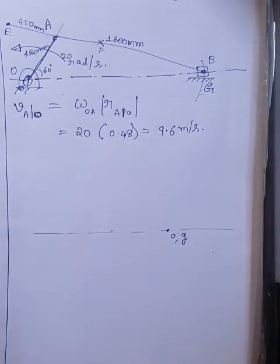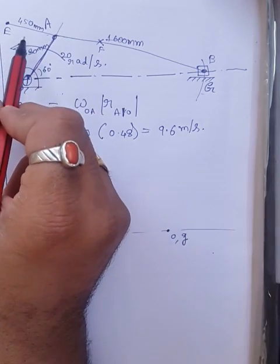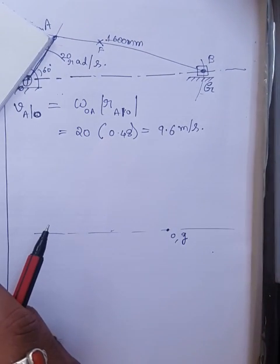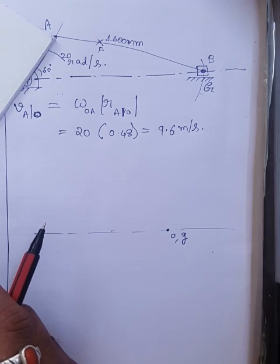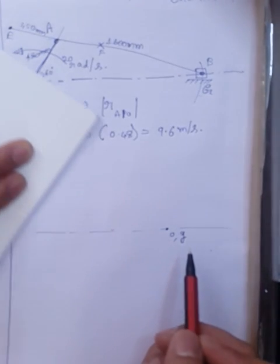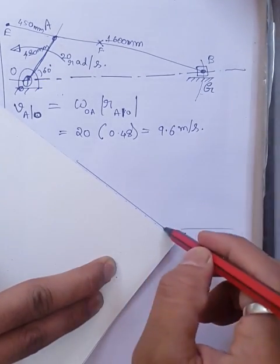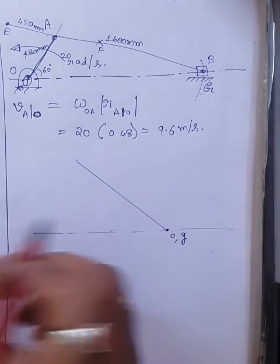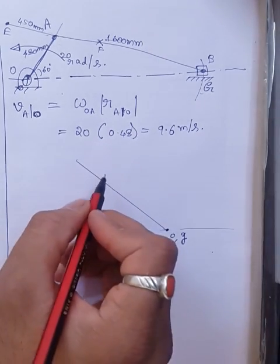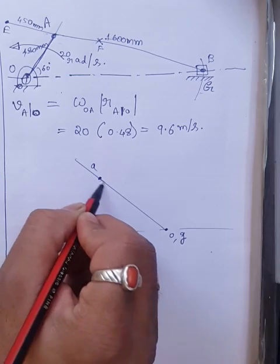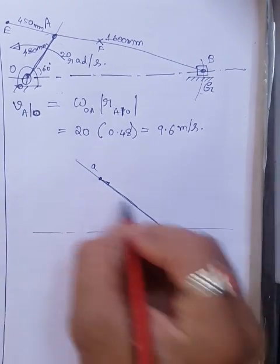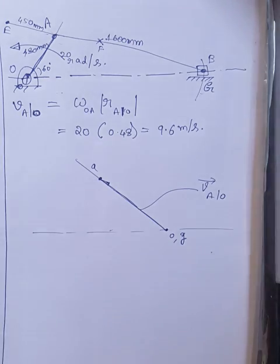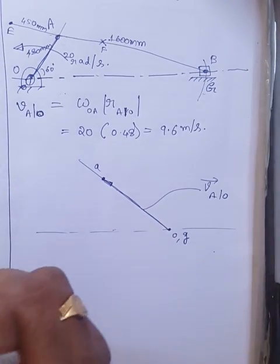We construct the velocity triangle. Since OA rotates counterclockwise, the velocity at point A is perpendicular to OA — this is the tangential velocity. We draw a line perpendicular to OA from the origin of the velocity diagram, and mark point a at a distance corresponding to 9.6 m/s. This vector represents the velocity of A with respect to O.